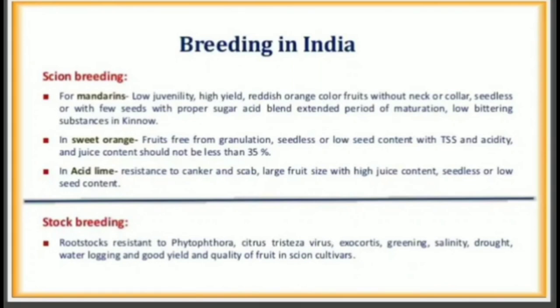In acid lime: resistance to canker and scab, large fruit size, high juice content, seedless or low seed content. Rootstock Breeding: rootstocks resistant to Phytophthora, Citrus tristeza virus, exocortis, greening, salinity, drought, and waterlogging, with good yield and quality of fruit in scion cultivars.